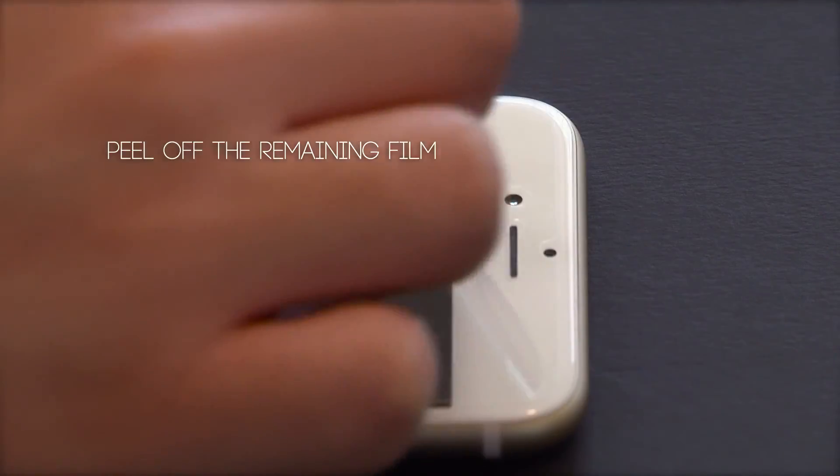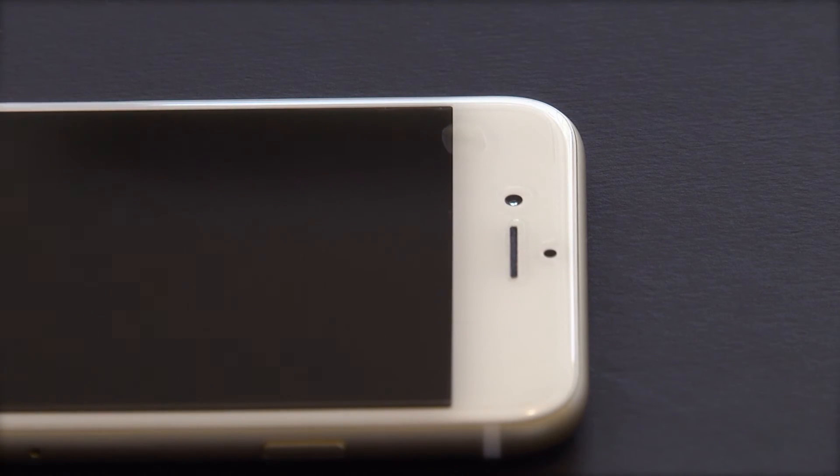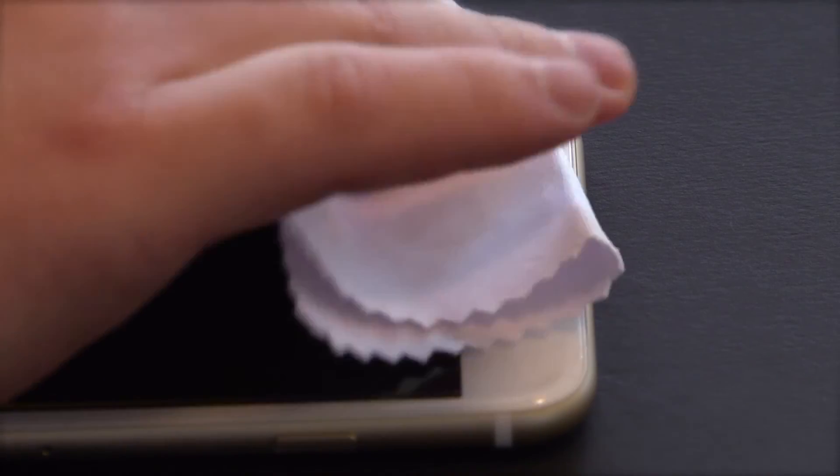Then peel off the remaining film, labeled with the number 2, and give your device one final polish with the microfiber cloth.